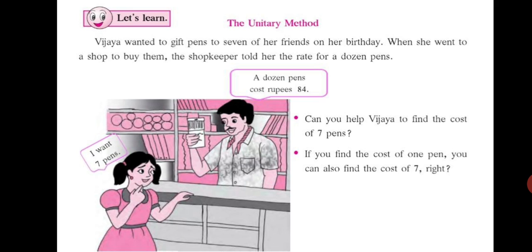Vijaya wanted to gift pens to 7 of her friends on her birthday. When she went to a shop to buy them, the shopkeeper told her the rate for a dozen pens. A dozen pens cost Rs. 84. Vijaya is thinking, but I want 7 pens. So how can she find the cost for 7 pens? She will first have to find out the cost of 1 pen, and then she can find the cost for 7 pens.